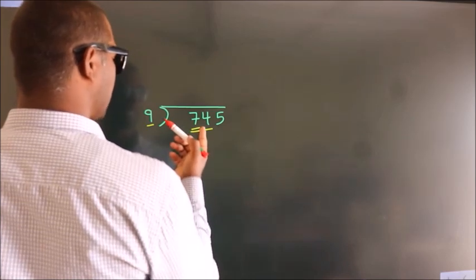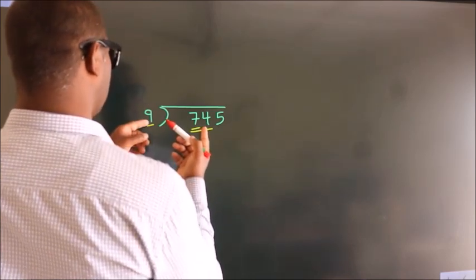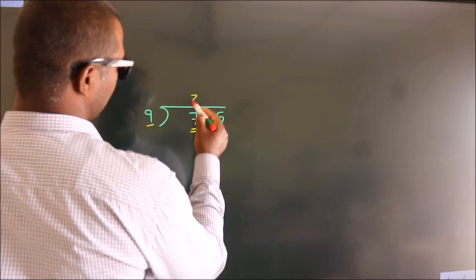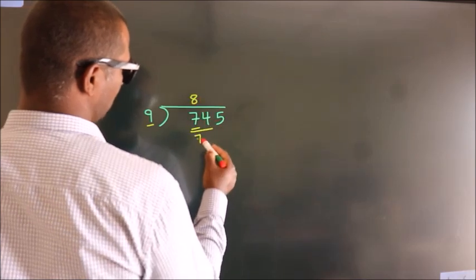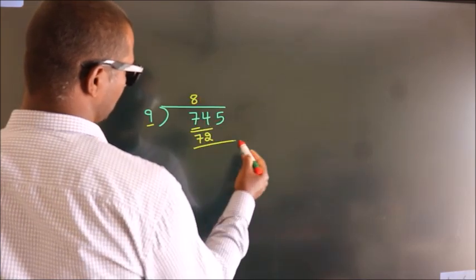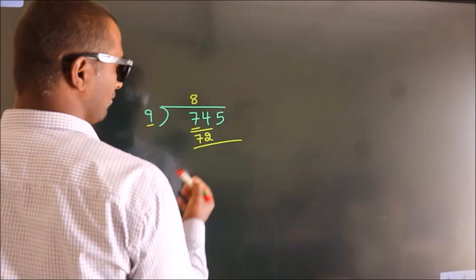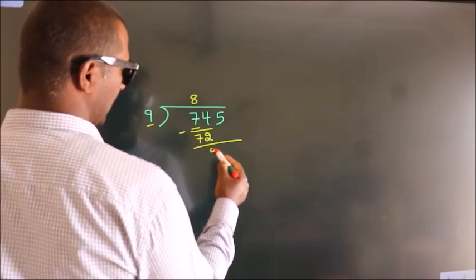A number close to 74 in the 9 table is 9 times 8, 72. Now we should subtract. We get 2.